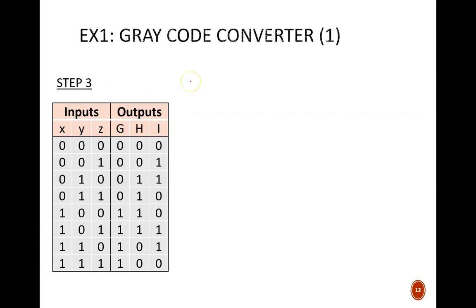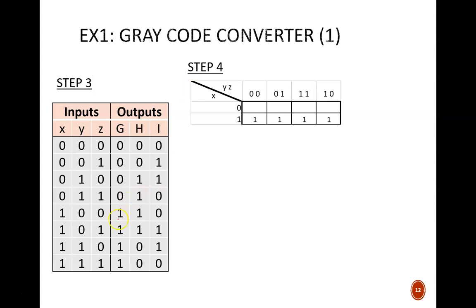Step 4 is to derive the Boolean equation for each output variable, based on the truth table. First up is capital G. Here, I used a three input K-map. Then, each one from the G column in the truth table leads to a one on the K-map. This results in a group of four and the very simple equation, G equals x.